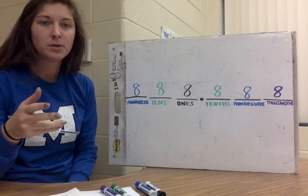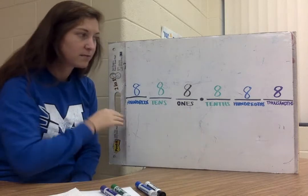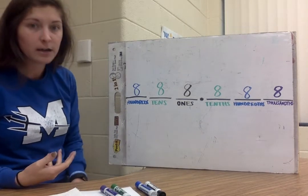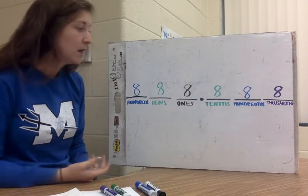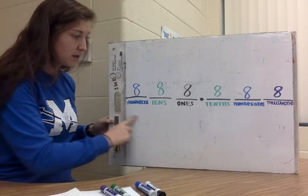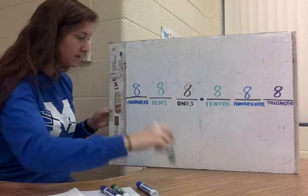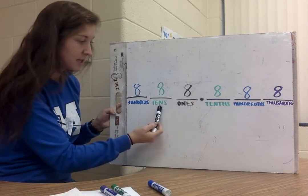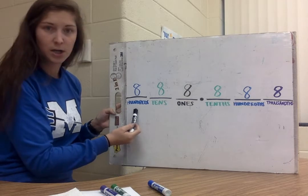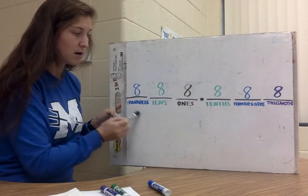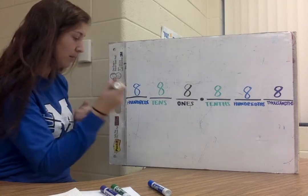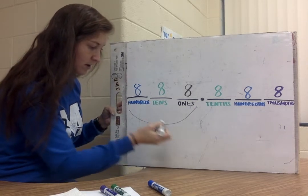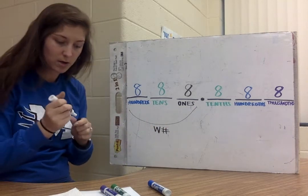So when we talk about place value, I already have our place value chart listed up here, and hopefully by now you guys should be able to identify all these different places. First thing that we have is we have our whole number place values here, and that's our ones, our tens, and our hundreds. And these numbers right here all represent whole numbers. So I'm going to draw just a little arrow down here and abbreviate that as whole numbers.